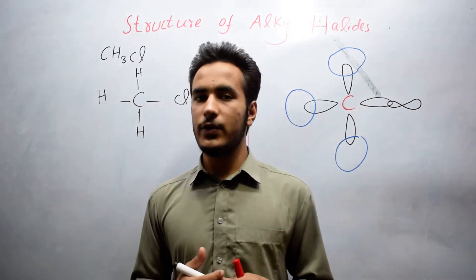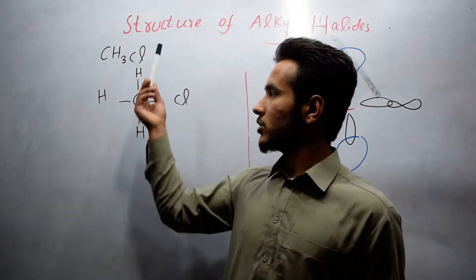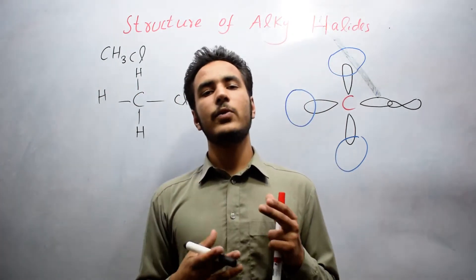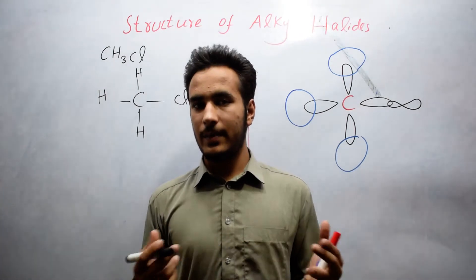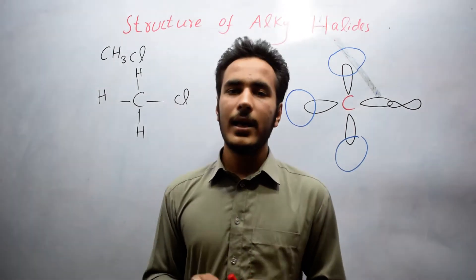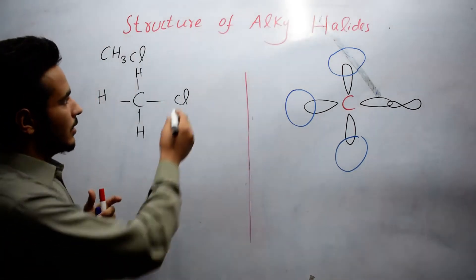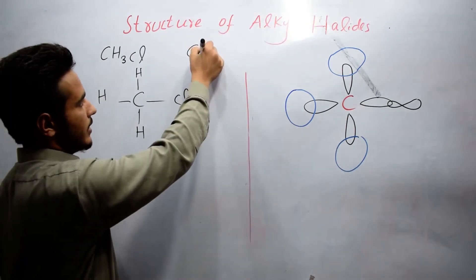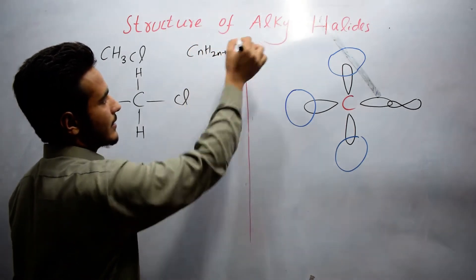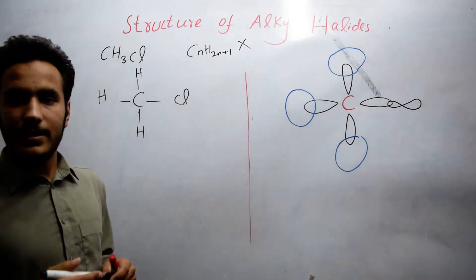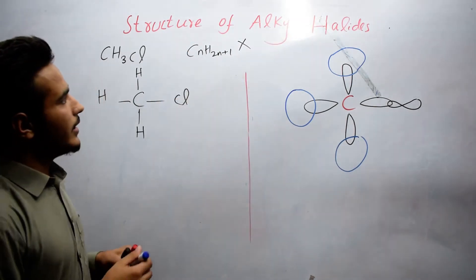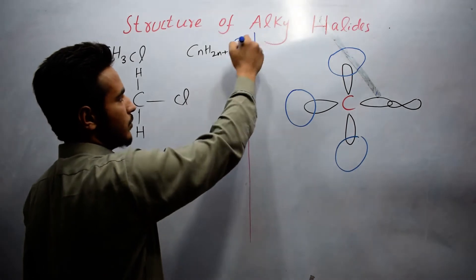In this video, I'll be talking about the structure of alkyl halides and which type of hybridization takes place in alkyl halides. The general formula of an alkyl halide is CnH2n+1X, where n is the number of carbon atoms and X represents the functional group (halogen).